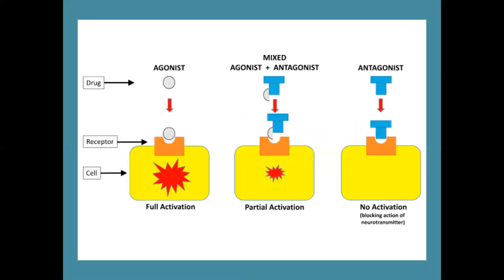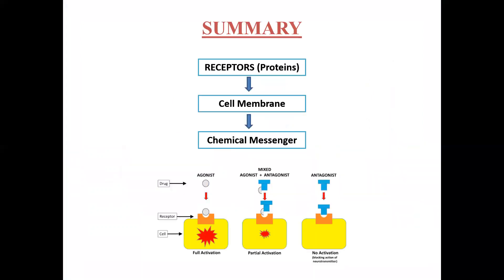To summarize: agonist drugs bind the receptor and result in full activation. Antagonist drugs bind the receptor and activation is fully blocked. Mixed agonist-antagonist drugs result in partial activation — less than full. So there are three types of drugs which act on receptors: agonist, antagonist, and mixed agonist-antagonist.